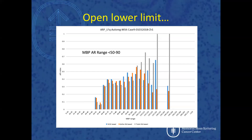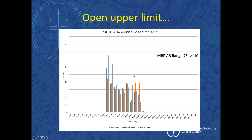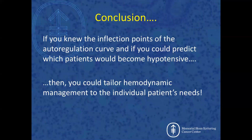We've seen some patients where we could not identify a lower inflection point but could identify an upper one, and others where we identified a lower but not an upper inflection point. I believe that doesn't mean those patients lack the missing inflection point — we simply never had that hemodynamic picture during the case. In conclusion: if you know the inflection points of the autoregulation curve and can predict which patients will become hypotensive, you can tailor hemodynamic management to the individual patient's needs. Thank you all very much.